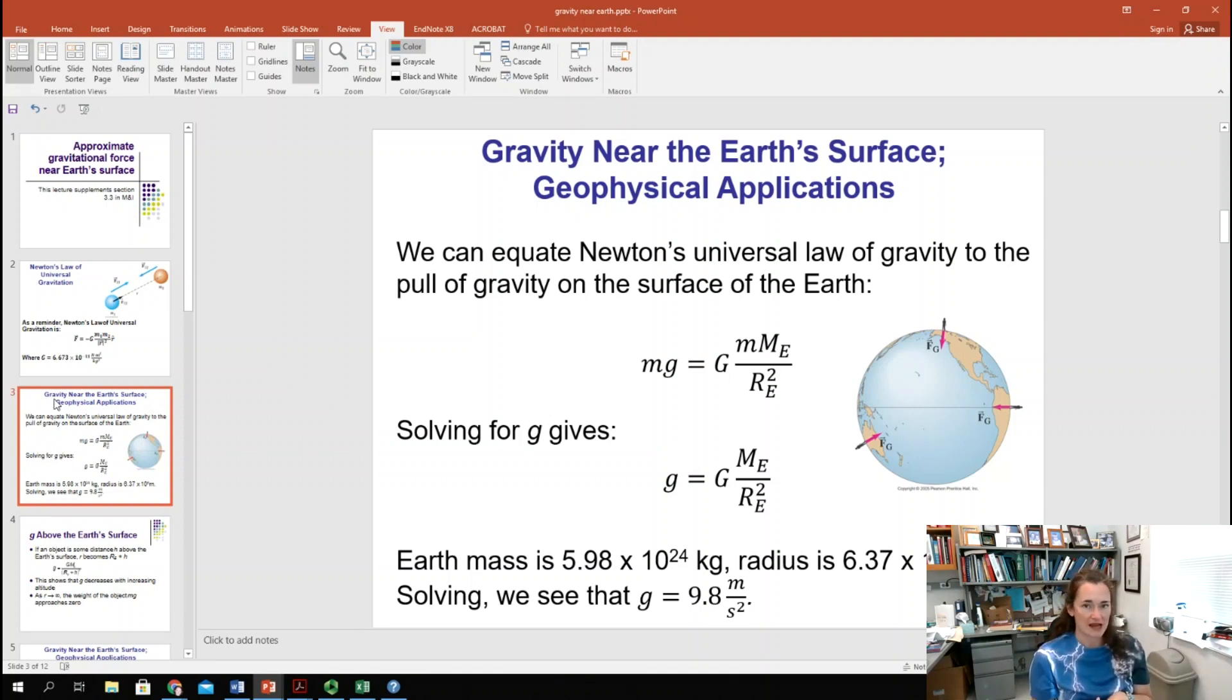So, if we equate the magnitudes of these two forces, mg and big G, little m, big M, over r squared here, then we can look and see that we can solve for little g, the acceleration due to gravity. To explain, little m is the mass of the object, like the little person that's sitting here on planet Earth, so it's the mass of that person. Little g is, as we're going to see, I'll solve for it, 9.8 meters per second squared. Big G is the universal gravitational constant, 6.673 times 10 to the minus 11 in SI units. m sub E is the mass of the Earth, and r sub E is the radius of the Earth squared.